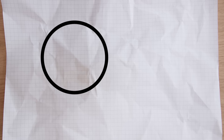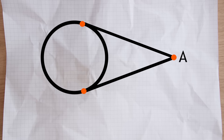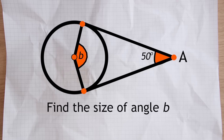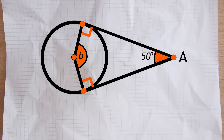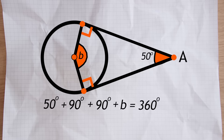The second theorem to do with tangents is that tangents that meet at a point are equal in length. In other words, if you have two tangents meeting at a point - in this case point A - those two lines will always be the same length. We can use those two facts to find the missing angles in these kinds of questions. You can see we have a quadrilateral where two of the sides are tangents to the circle, and the other two lines are radii going from the centre to the circumference. Therefore they form a 90 degree angle where they meet those tangents. We know angles in a quadrilateral always add to 360 degrees, so if we subtract those three known angles from 360 degrees that tells us the missing angle - in this case 130 degrees.